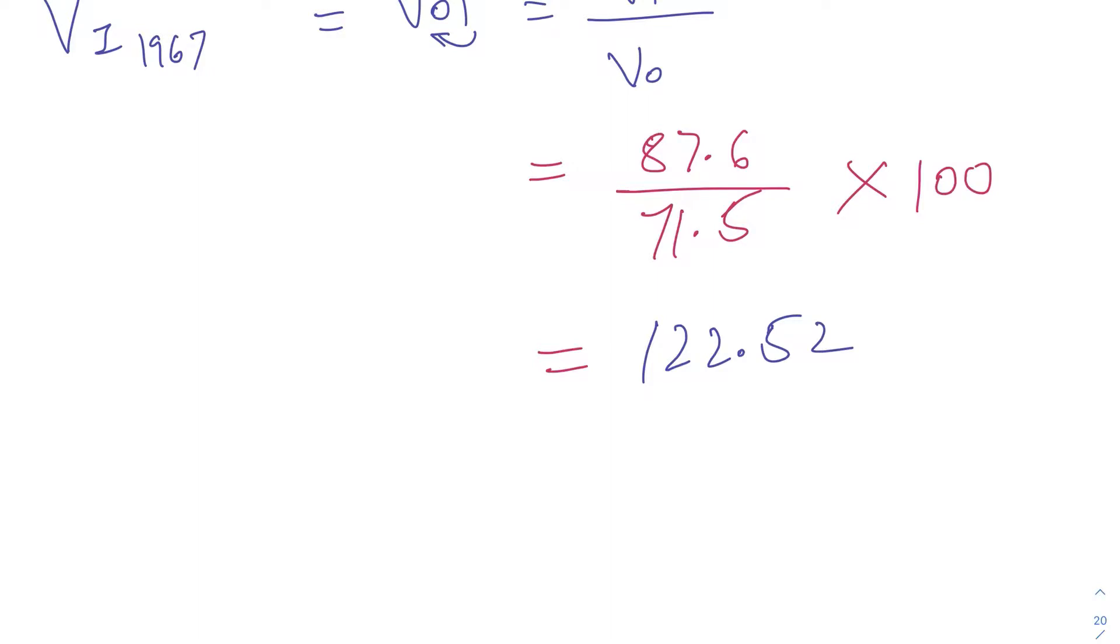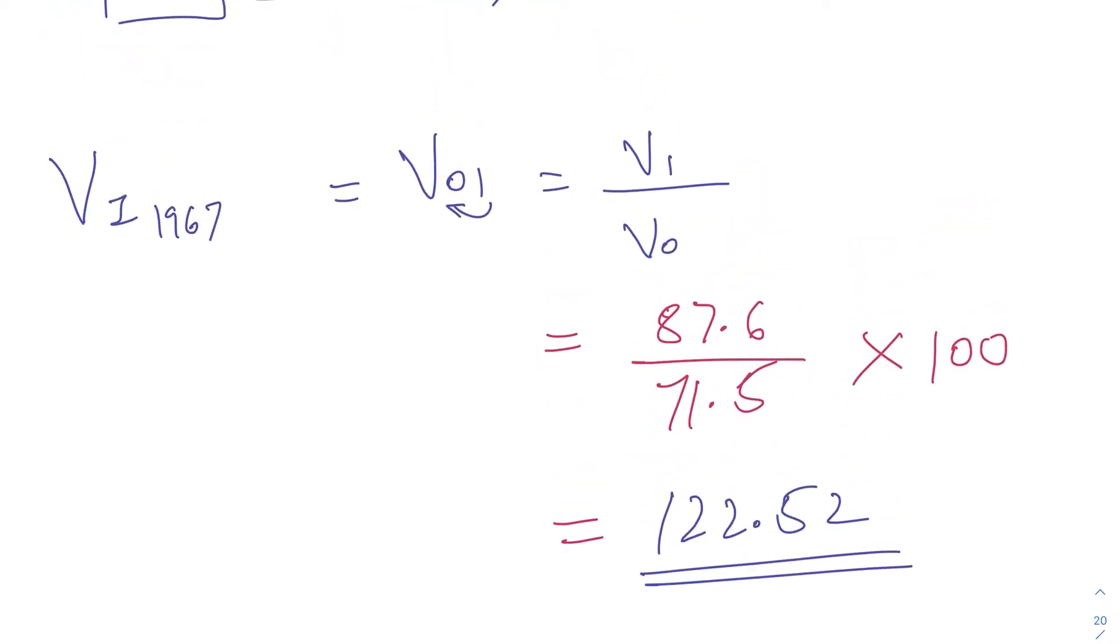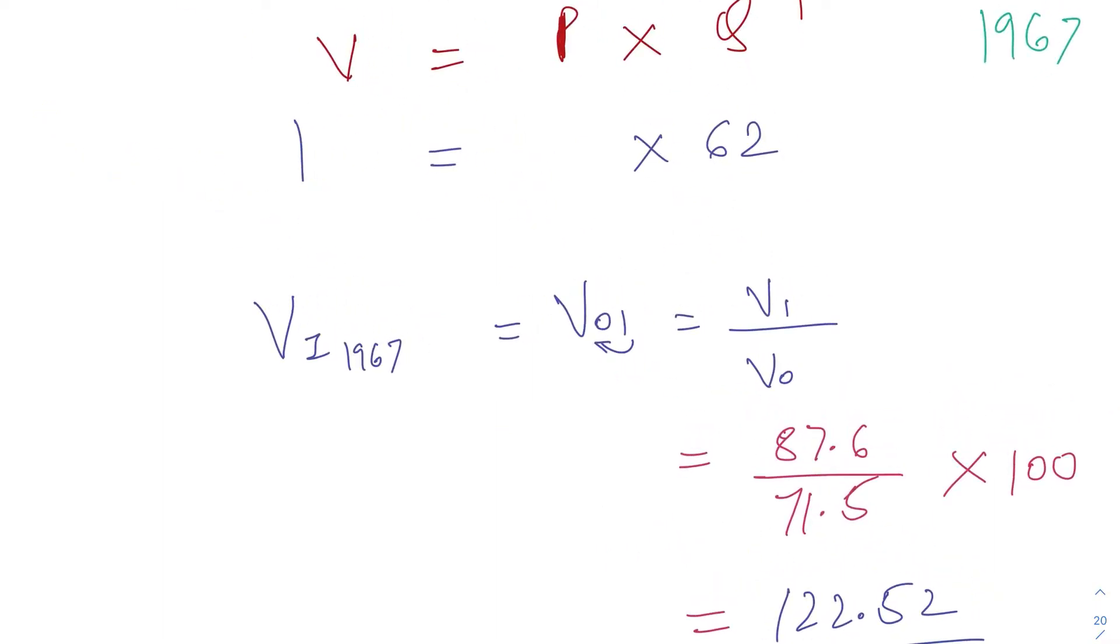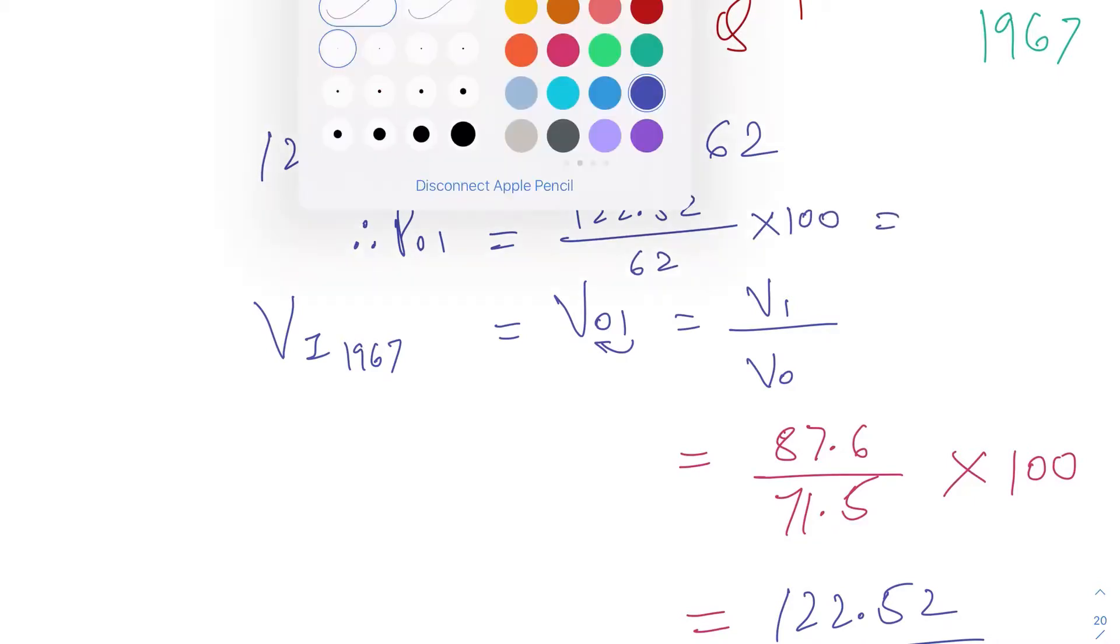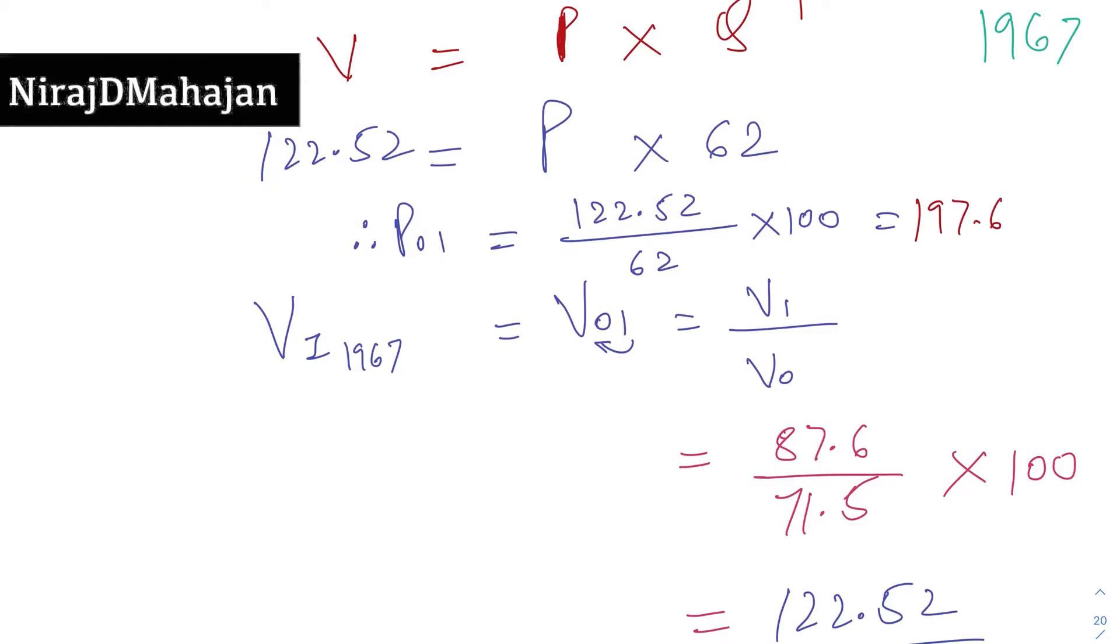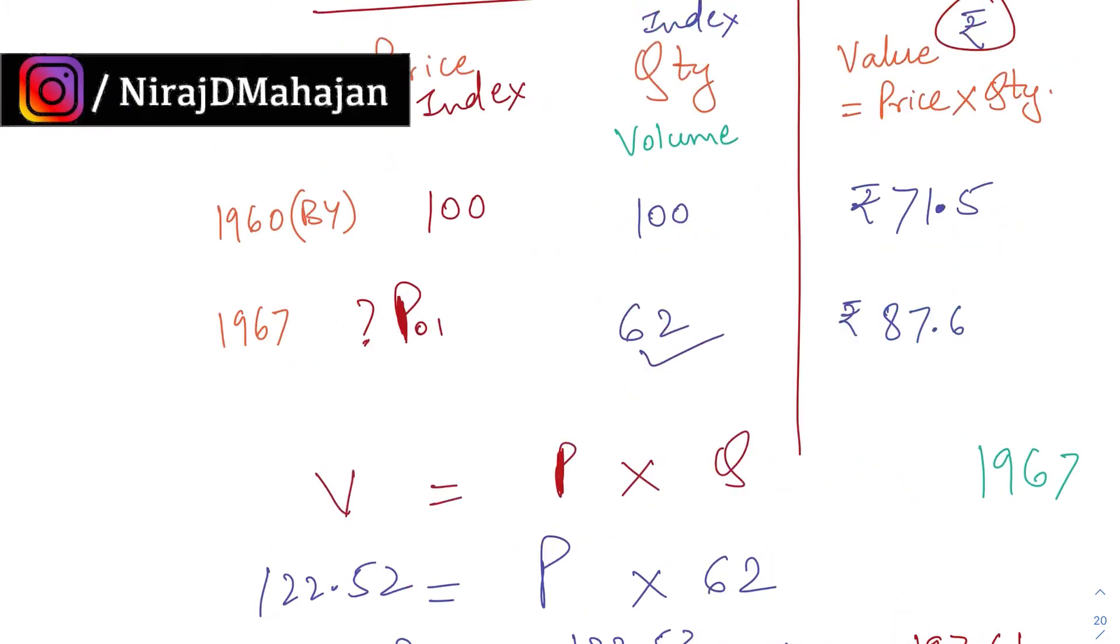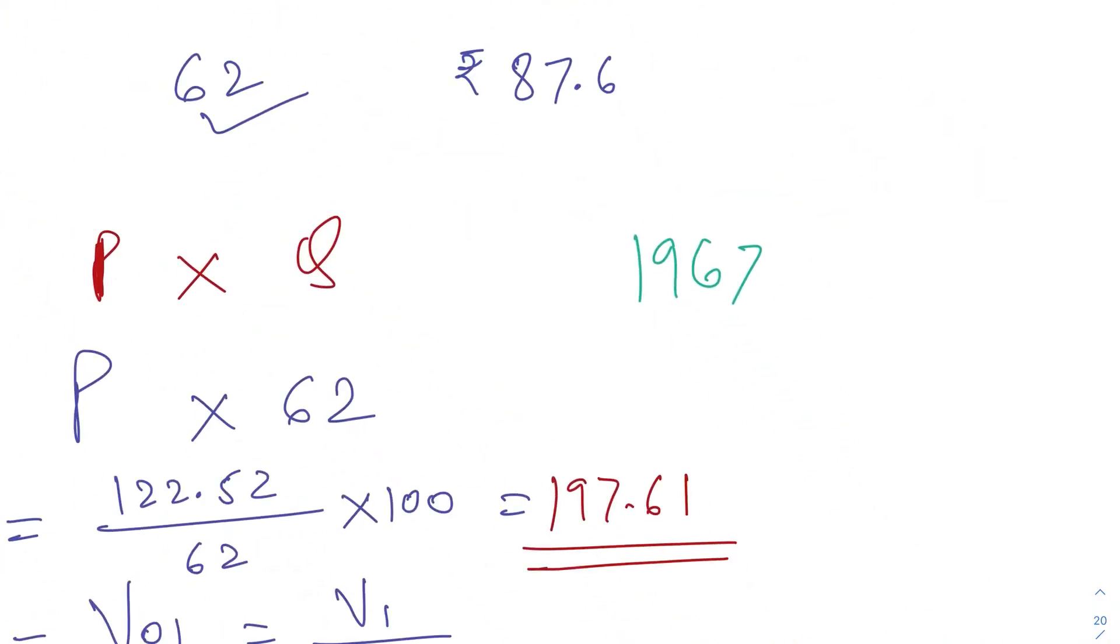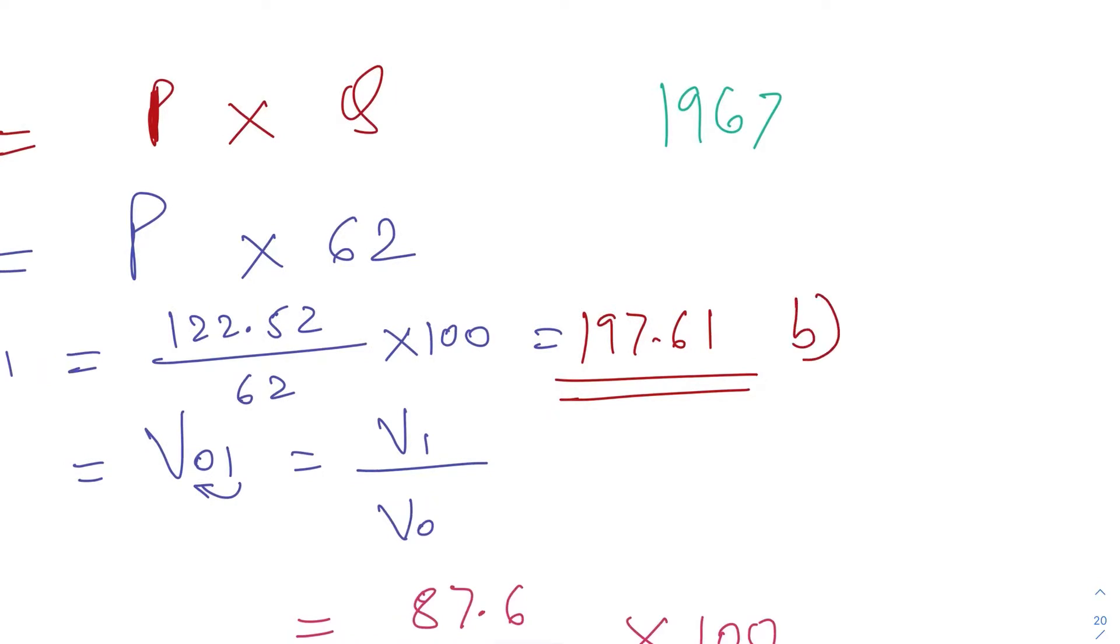Now let's apply your main formula here. 122.52—you have to get to the price index number. Therefore, price index number obviously of 1967 is 122.52 upon 62. We need index number. That's why this answer—see what will come—the price is 197.61, which is your option, option b. So b is correct: 197.61. That's it.